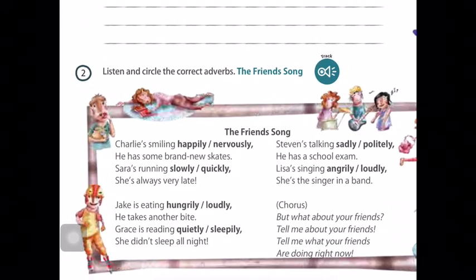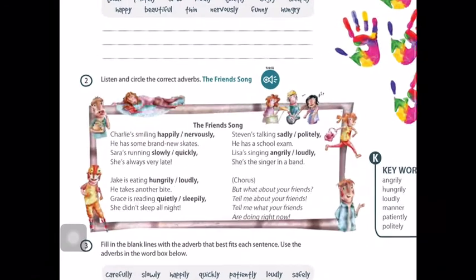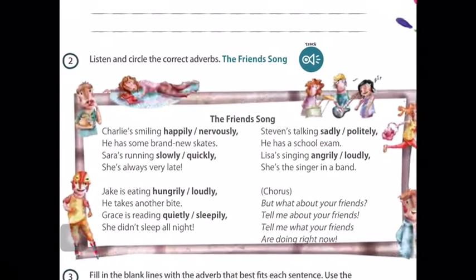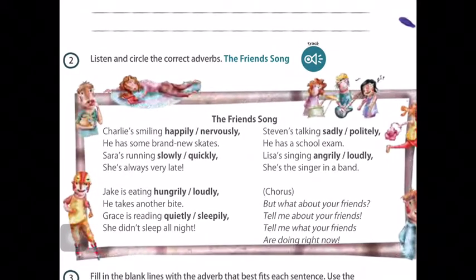And in exercise number two, we have a song. It's the friend song. So you listen and circle the correct adverbs. What are adverbs? Adverbs are the words that finish with L-Y. Happily and nervously are adverbs.